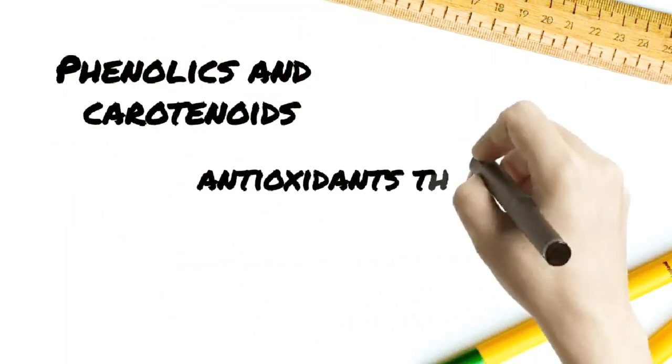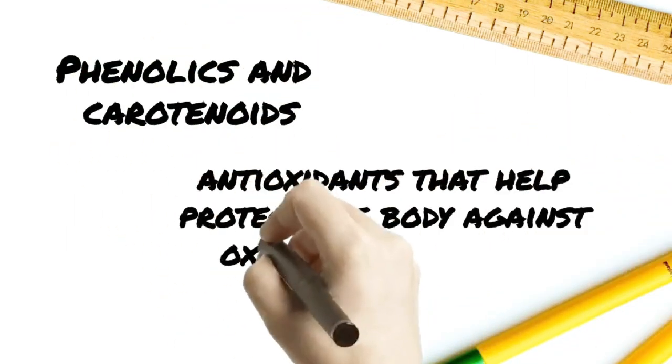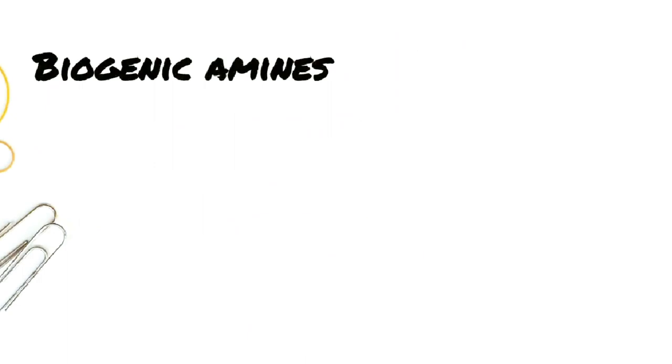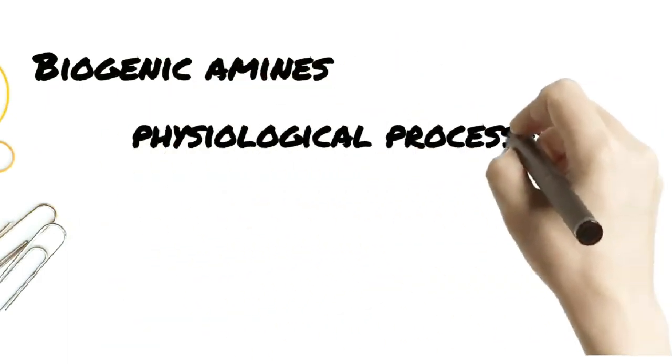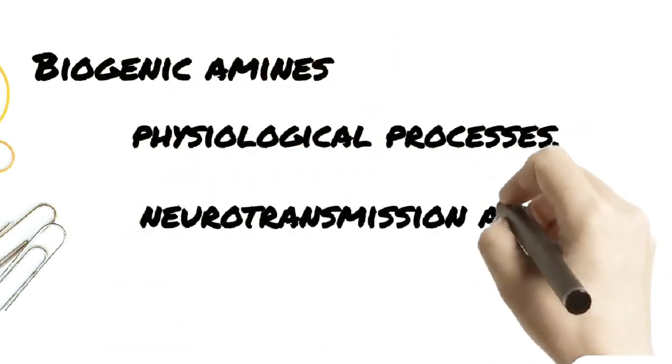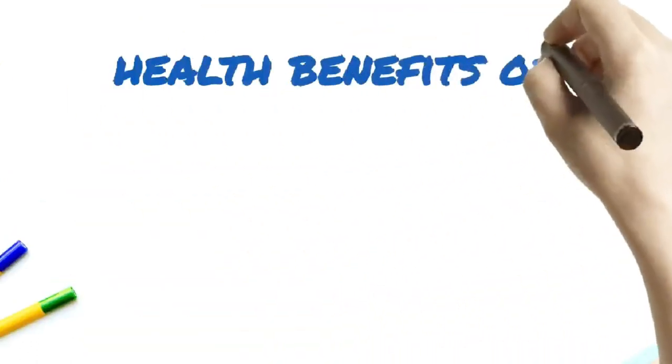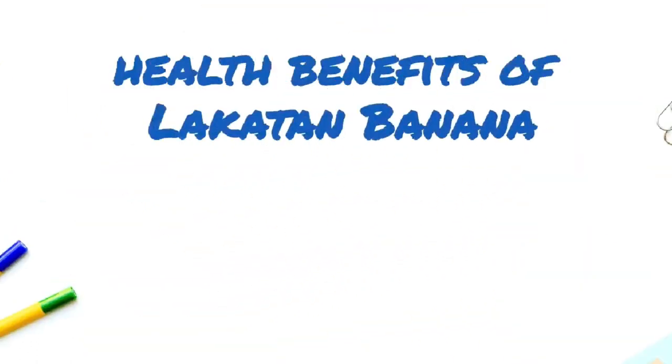Phenolics and carotenoids are antioxidants that help protect the body from oxidative stress and inflammation. Biogenic amines, on the other hand, is involved in various physiological processes such as neurotransmission and immune response.